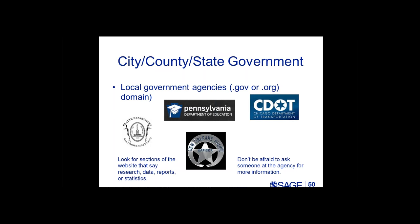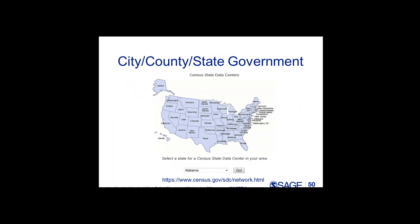We talked about the ACS earlier, which is a treasure trove of information for pretty much every area in the U.S. But there are often other census data sets and programs that provide data at the state and local level. One of the best ways to find this data in an even better format is to see if your state participates in the Census State Data Center program. These state data centers are often associated with a local university or state department of planning. I've used the Maryland State Data Center very often for clear versions of state and local data. The link at the bottom is to the network site so you can check out the information for your state.